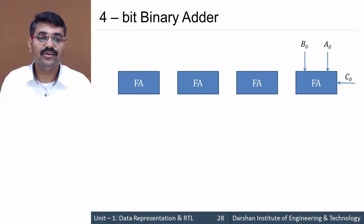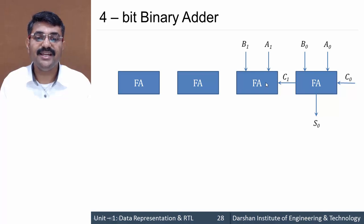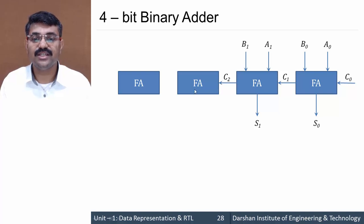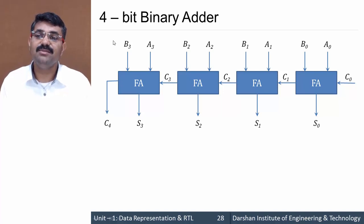The first full adder produces sum S0 and carry C1, which propagates to the next full adder with inputs A1 and B1, producing sum S1 and carry C2. That carry propagates to the third full adder with inputs A2 and B2, giving sum S2 and carry C3. C3 then propagates to the fourth full adder with inputs A3 and B3, producing sum S3 and carry C4.